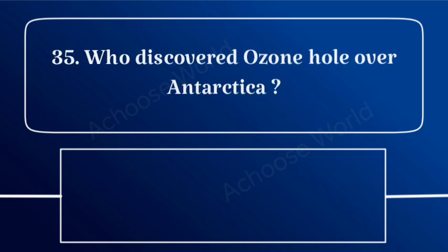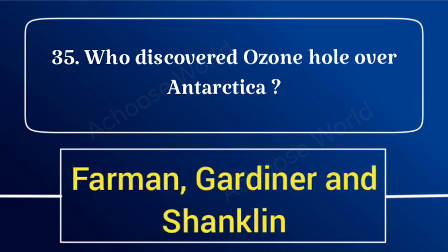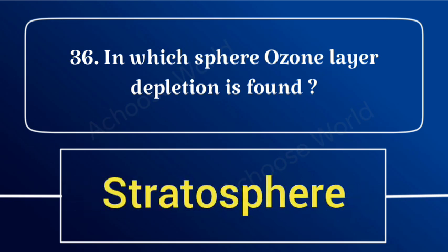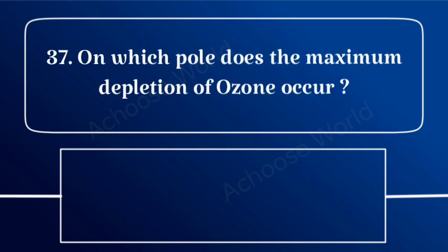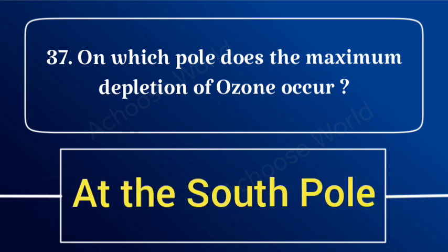Who discovered the ozone hole over Antarctica? Farman, Gardiner, and Shanklin. In which sphere is ozone layer depletion found? On which pole does the maximum depletion of ozone occur? At the south pole.